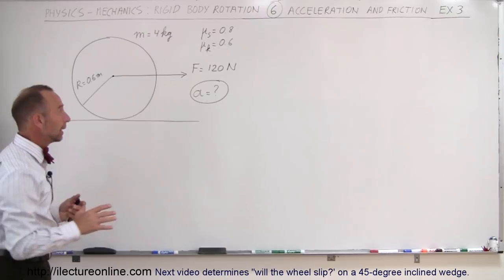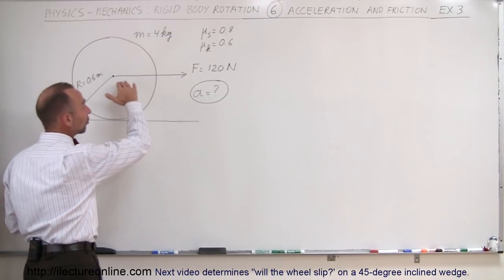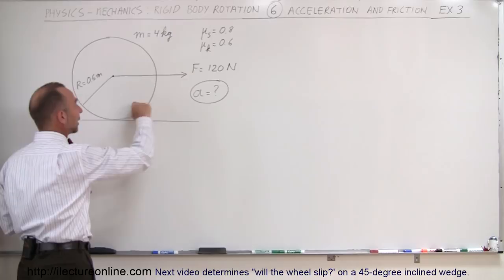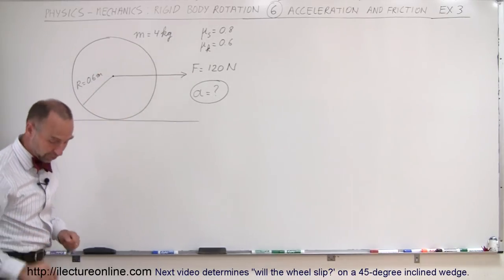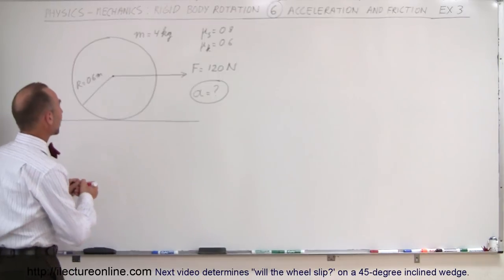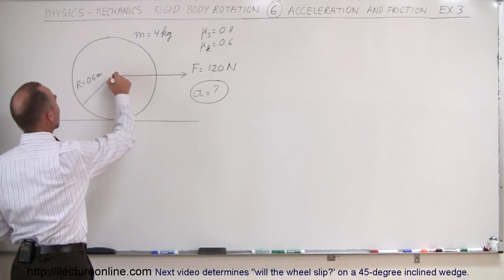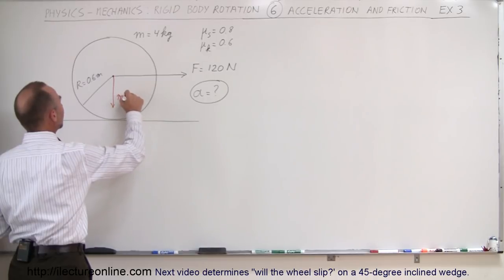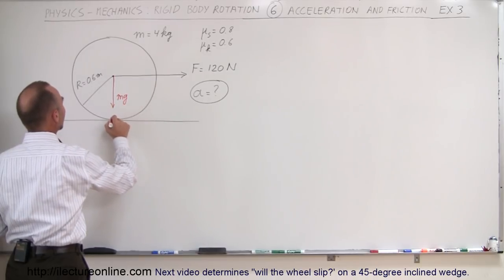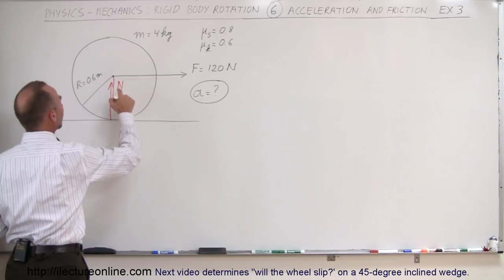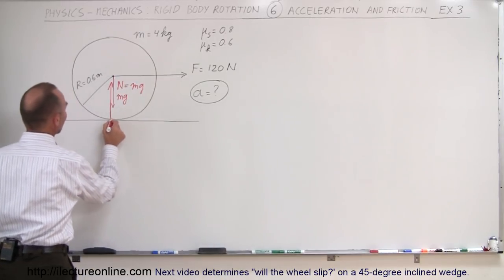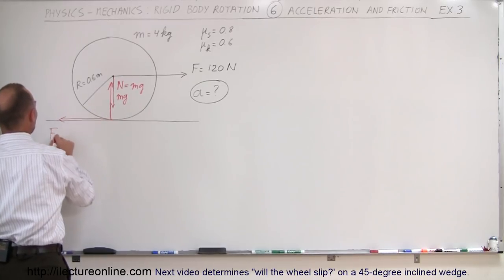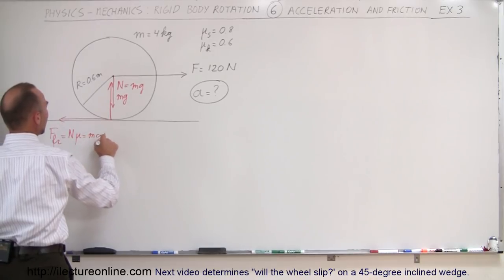Now one of two things can happen: either the force is so great that the acceleration is so large that the wheel cannot keep up. Let me draw the forces on this wheel. We first have the force of gravity pulling down, mg, and the normal force from the surface pushing back up, N. That has to be equal to mg, and therefore we're going to have a friction force directed to the left.